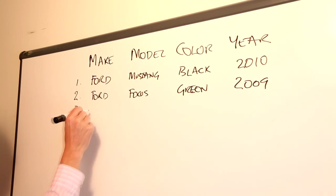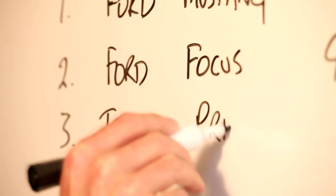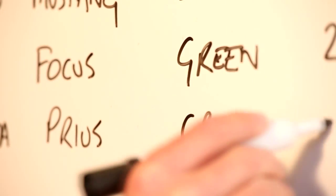And then finally we've got a Toyota, a Prius, which is green, and its age is also 2009.